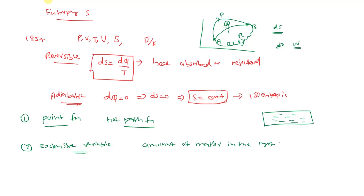For example, consider a system — some gas taken inside a cylinder or container — with entropy of 10 Joule per Kelvin. Now if the system is equally divided, the entropy of each part is 5 Joule per Kelvin. The entropy changes with the amount of matter, which means entropy is an extensive variable.